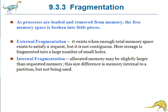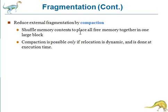In the case of external fragmentation, the memory allocations are not contiguous, so we cannot use that memory. Here we use compaction — one of the techniques to reduce external fragmentation. We have to shuffle memory contents to place all free memory together into one large block. Compaction is possible only if relocation is dynamic and is done at execution time.